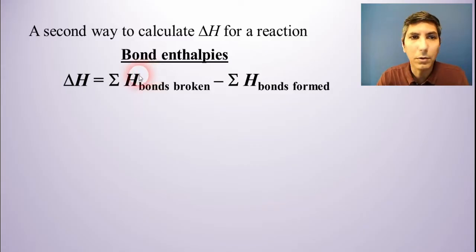Now this is the equation that we're going to use to do that. The delta H of a reaction is equal to the sum of the enthalpies of all the bonds broken in a reaction minus the sum of the enthalpies of all the bonds that are formed in a reaction.